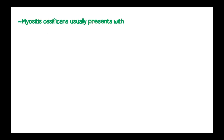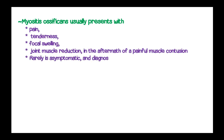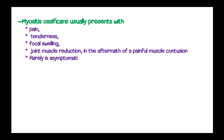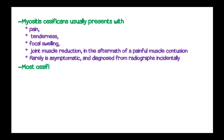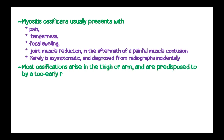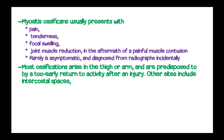Myositis ossificans usually presents with pain, tenderness, focal swelling, and reduced joint and muscle range of motion in the aftermath of a painful muscle injury. Rarely it is asymptomatic and diagnosed incidentally from radiographs. Most ossifications arise in the thigh or the arm and are predisposed to by early return to activity after an injury.